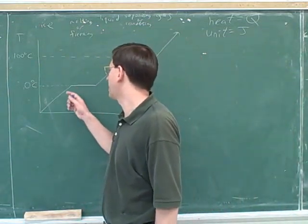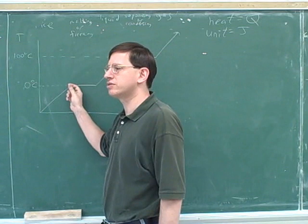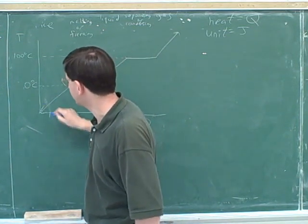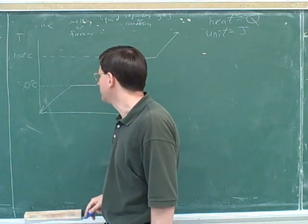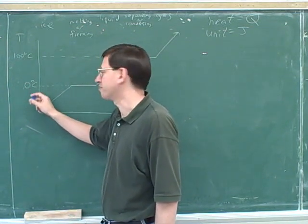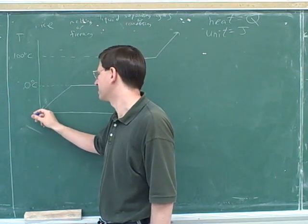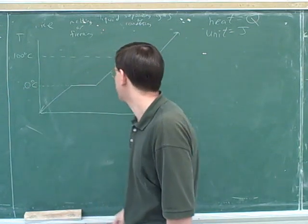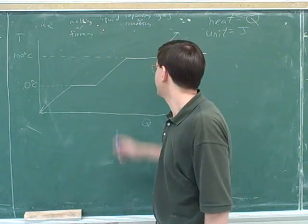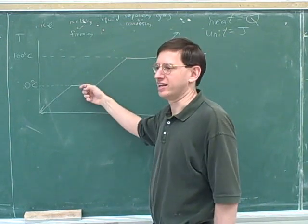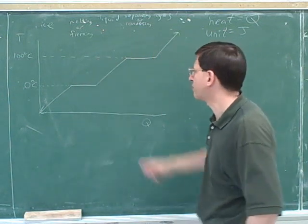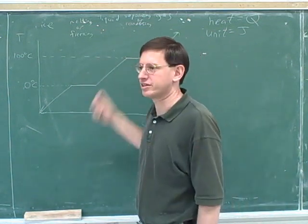Once all the water vapor has condensed into liquid and you continue to remove heat, the liquid water will decrease in temperature. When it gets down to zero degrees Celsius, it will start freezing. That same flat region represents melting if moving left to right, or freezing if moving right to left. After all the liquid water has frozen, if you continue removing heat, the temperature keeps decreasing. Note that this graph has zero positioned higher up since the ice portion extends below it.